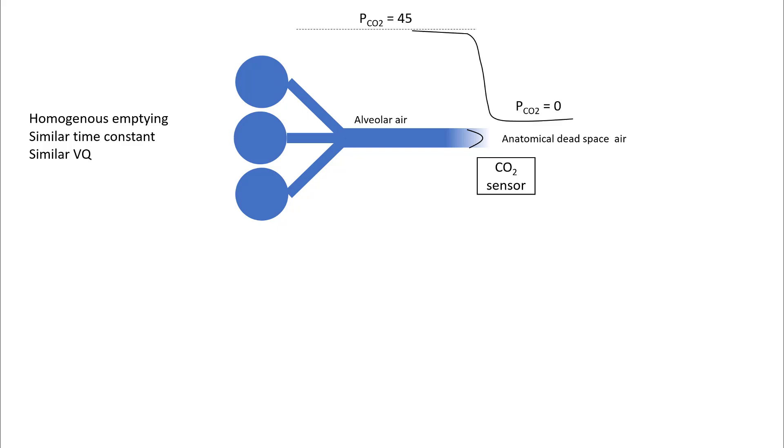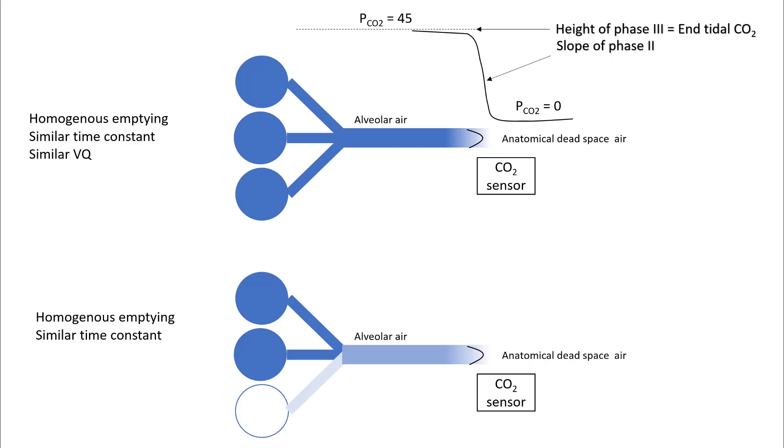So the CO2 sensor changes from 0 to 45 pretty rapidly—the slope of phase two is almost vertical. The height of phase three will equal your end-tidal CO2, and in this case will be equal to 45, as there is no dead space. If you have homogeneous emptying and similar time constants but have a dead space alveolus, the alveolar air during exhalation is going to get diluted.